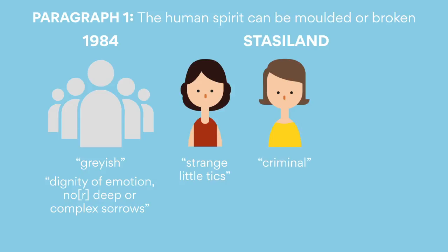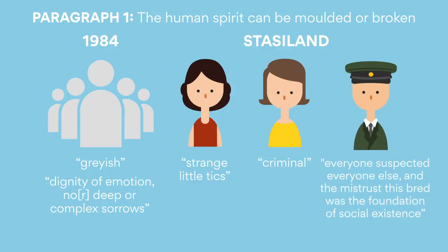However, the discipline may also refer to the pervasive surveillance of the Stasi, to the point where everyone suspected everyone else, and the mistrust this spread was the foundation of social existence. Discipline could even refer to the fact that the memory of the GDR has been molded such that it is remembered through rose-tinted lenses, with a sense of nostalgia, or nostalgia for the East. Any of these points demonstrates the fluidity of the human spirit.